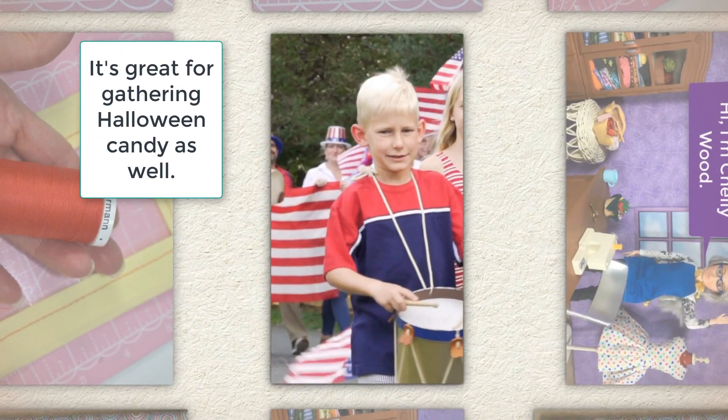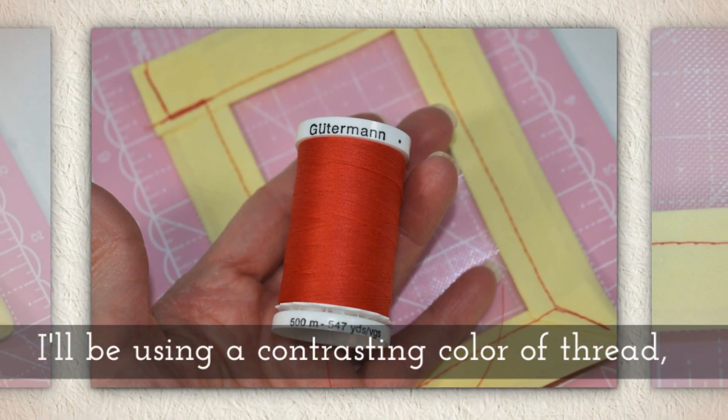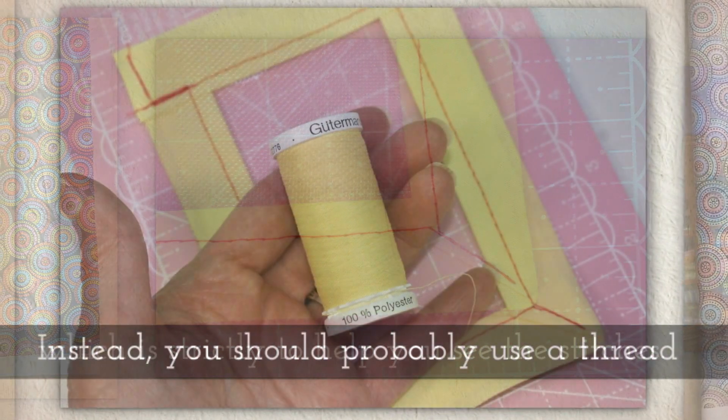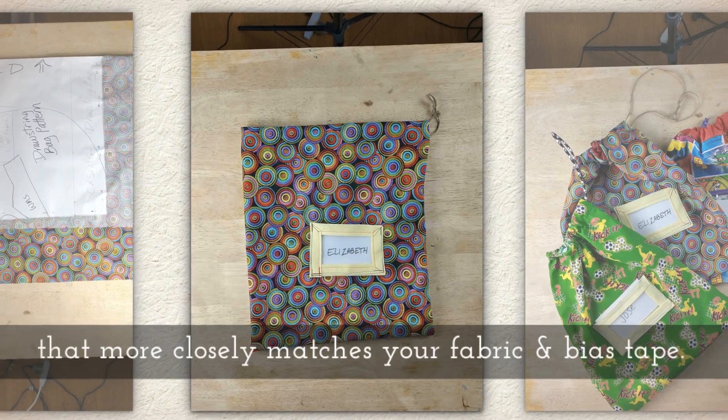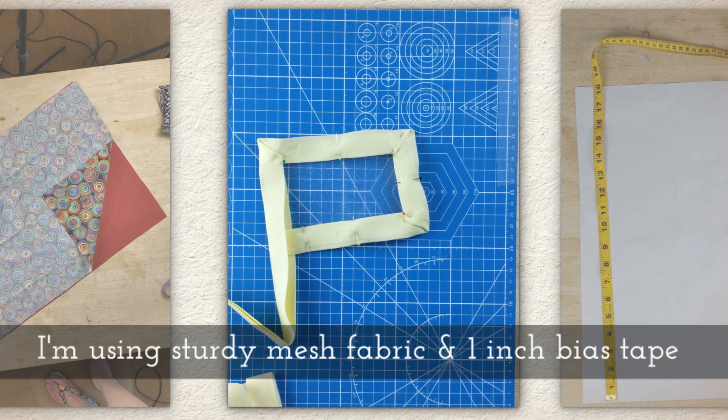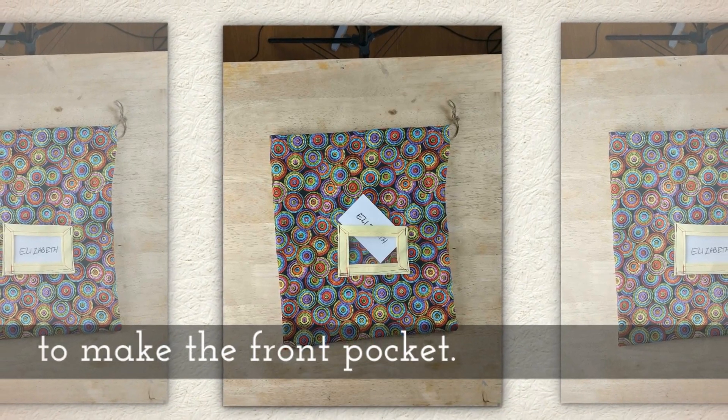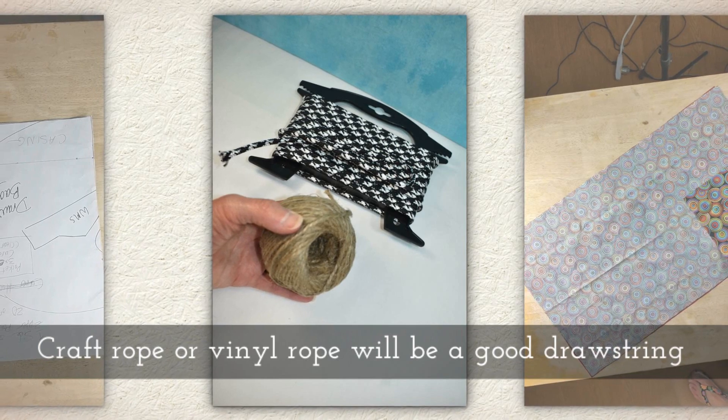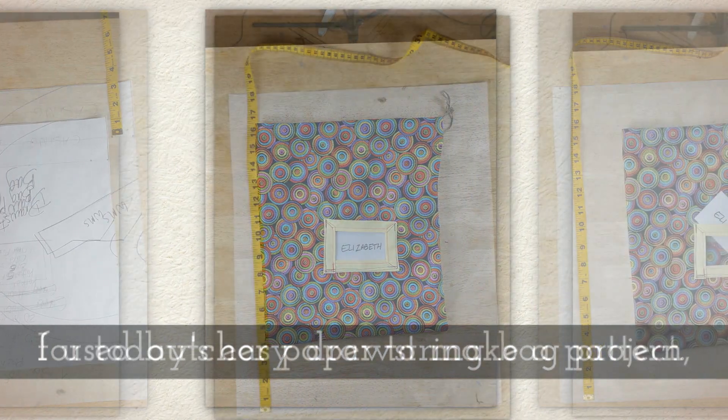It's a wonderful tool for Halloween candy gathering as well. I'll be using a contrasting color of thread, which is strictly to help you see the stitches. But instead you should probably use a thread that more closely matches your fabric and your bias tape. I'm using sturdy mesh fabric and 1 inch bias tape to make the front pocket.